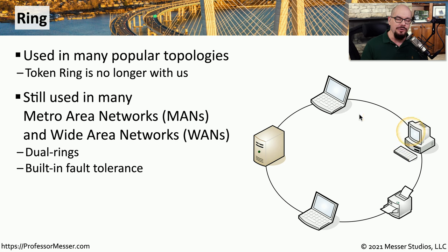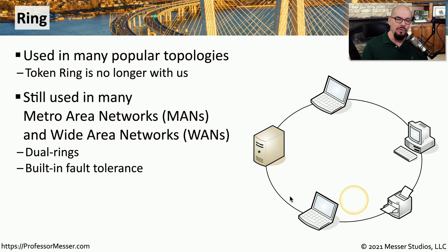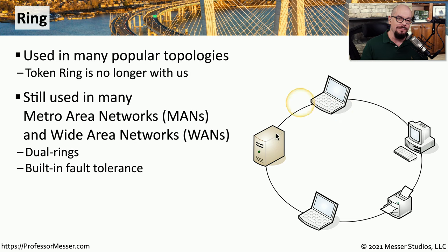But the devices that are on either side of that severed link recognize that traffic is no longer able to traverse that connection and instead will loop back the connection on those individual endpoints. So instead of having data go around a ring, the data will instead go as far as it can around the ring and then loop back to get to the other side, maintaining uptime and availability even in the case where part of that ring may be severed.